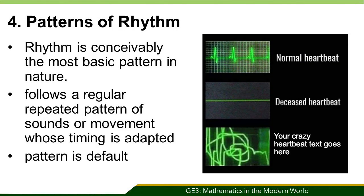Patterns of rhythm. Rhythm is conceivably the most basic pattern in nature. Our hearts and lungs follow a regular repeated pattern of sounds or movement whose timing is adapted to our body's needs. Many of nature's rhythms are most likely similar to a heartbeat, while others are like breathing. The beating of a heart, as well as breathing, have a default pattern.